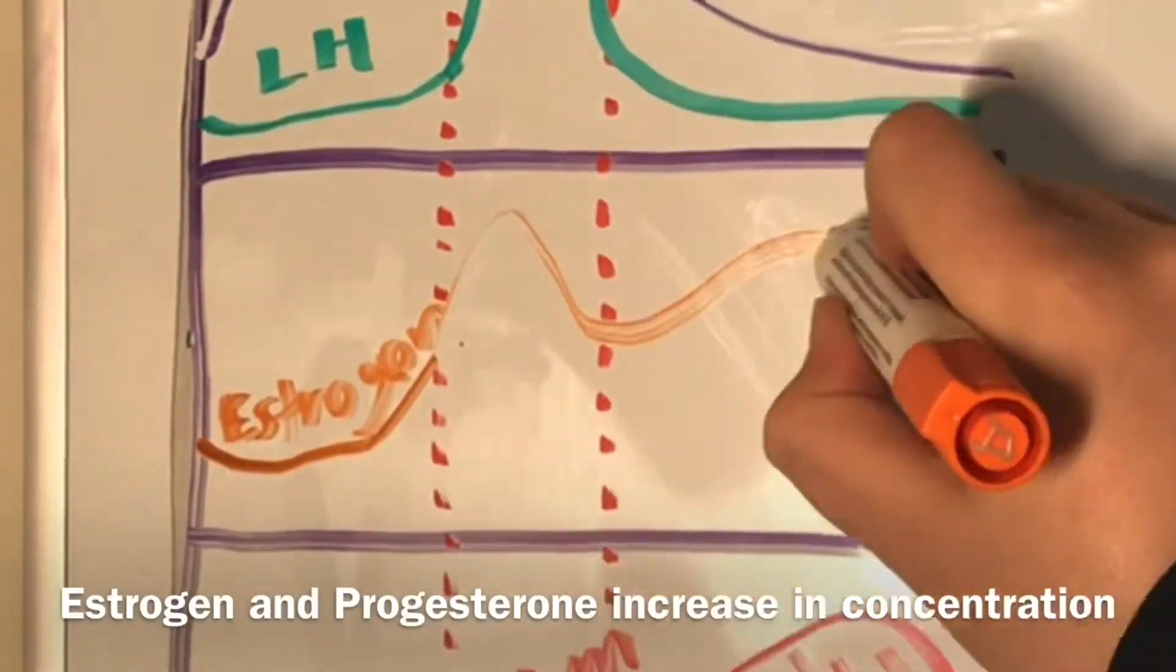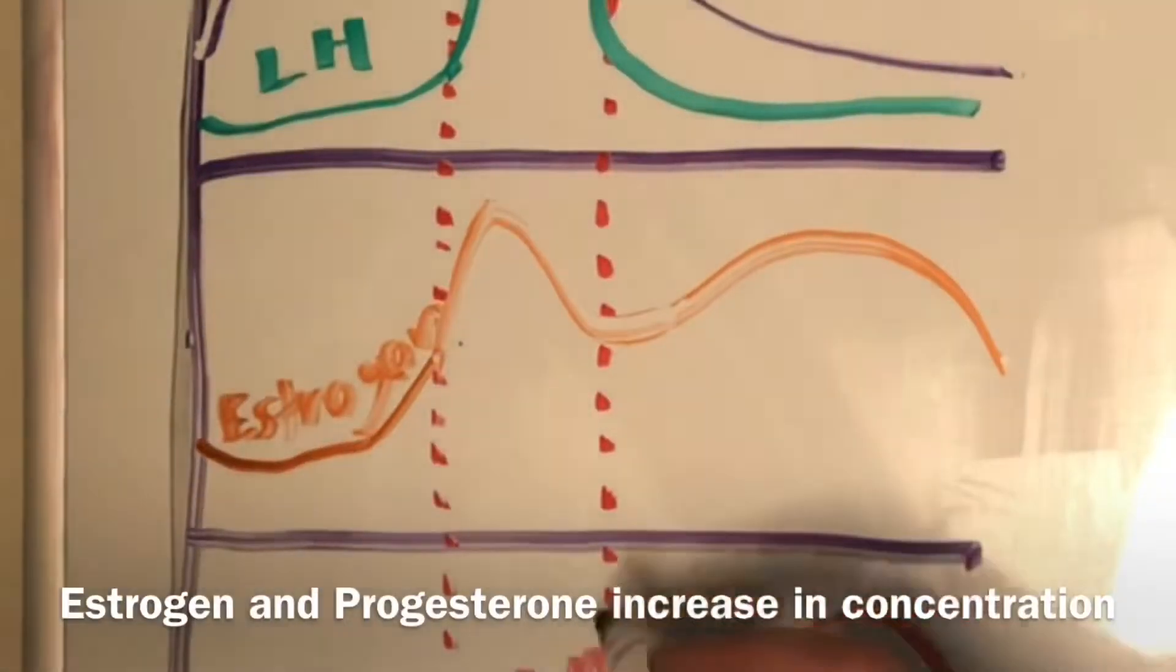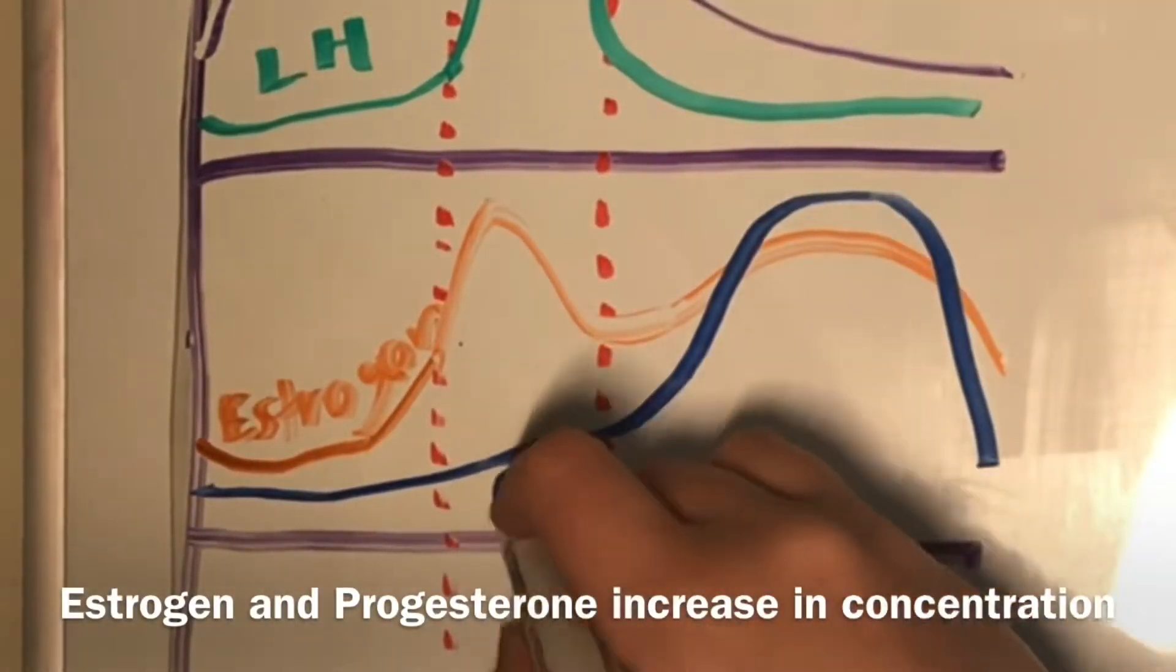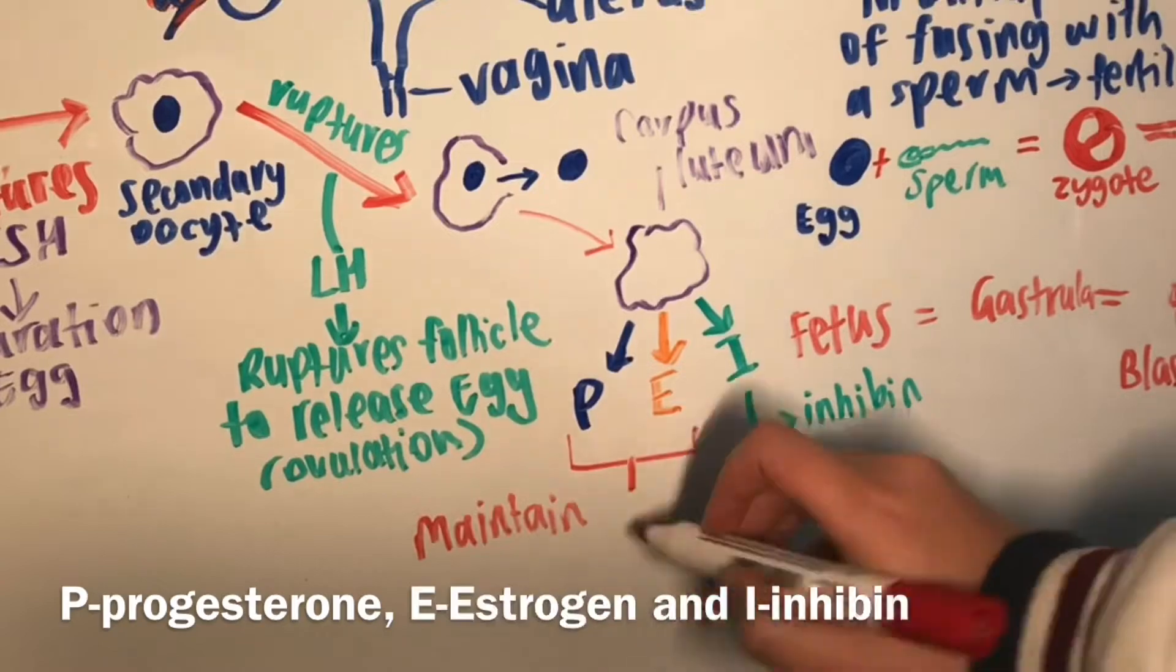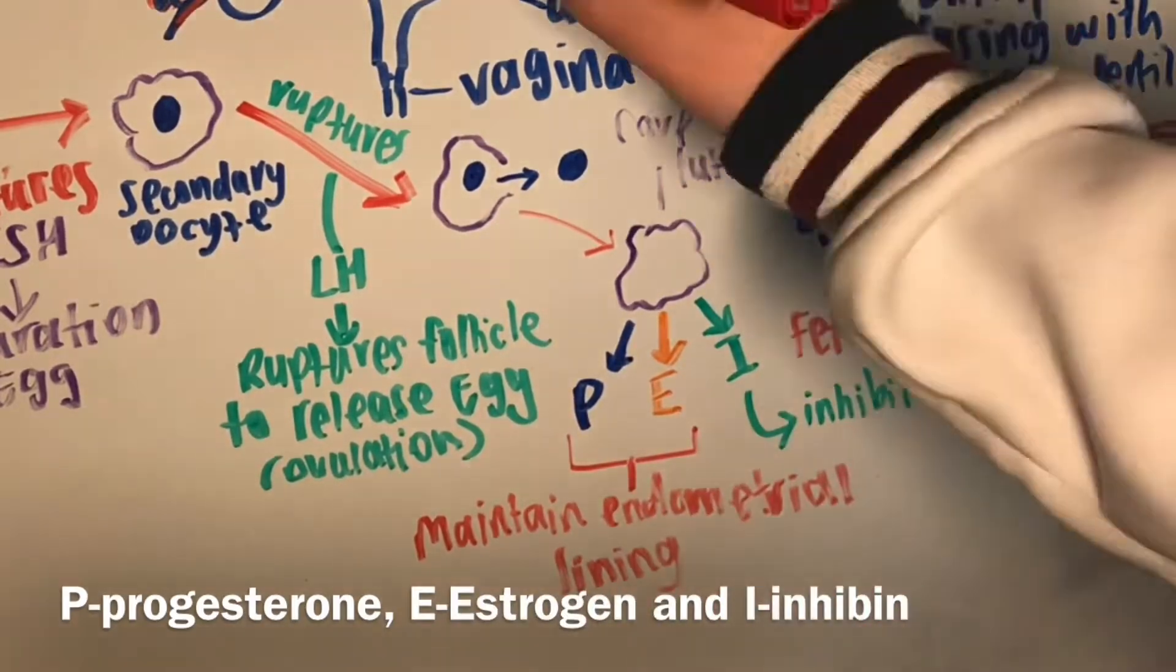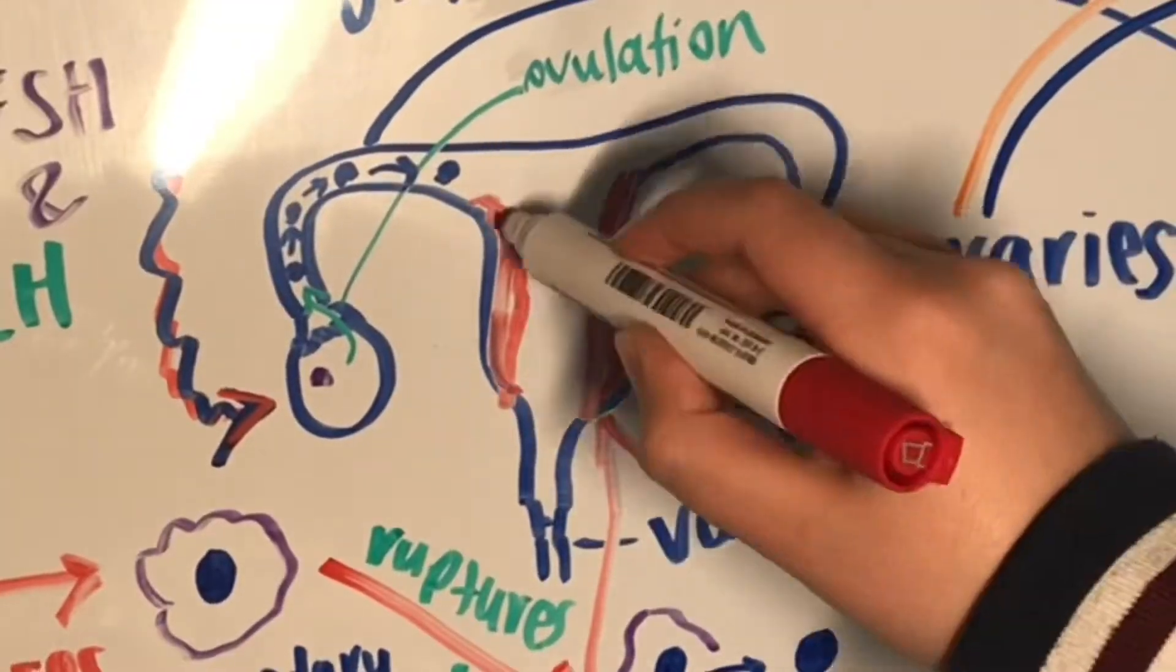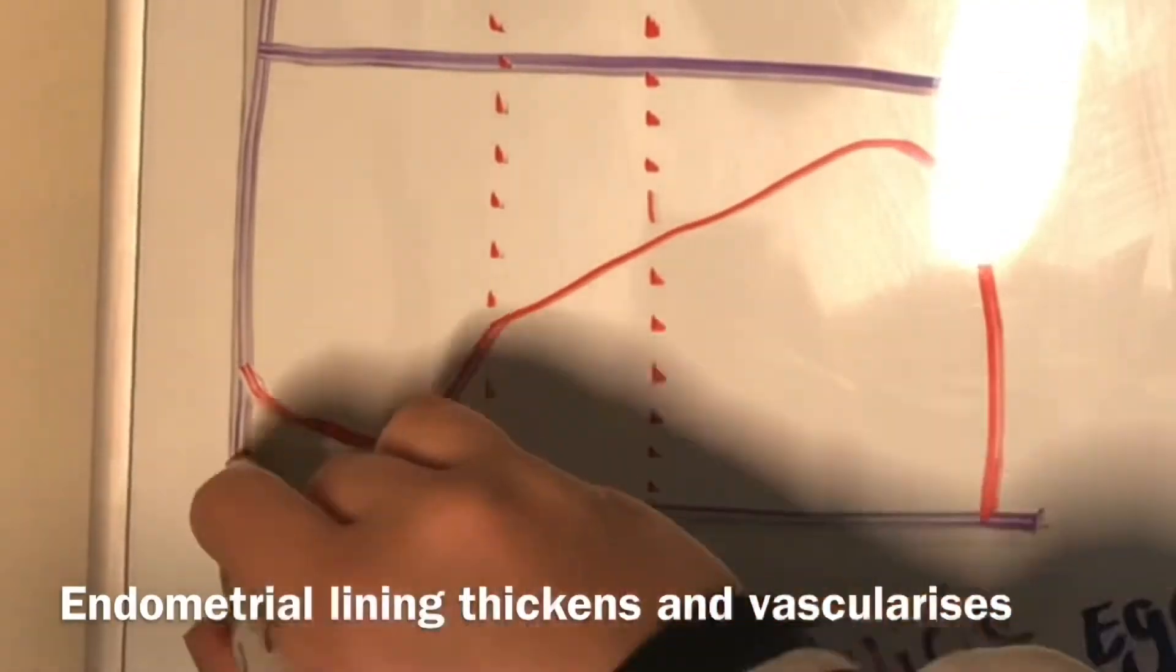The concentration of estrogen will increase as well as progesterone. These two hormones maintain the endometrial lining by vascularizing the uterine walls with blood that is rich in nutrients. This causes it to thicken and prepare for implantation.